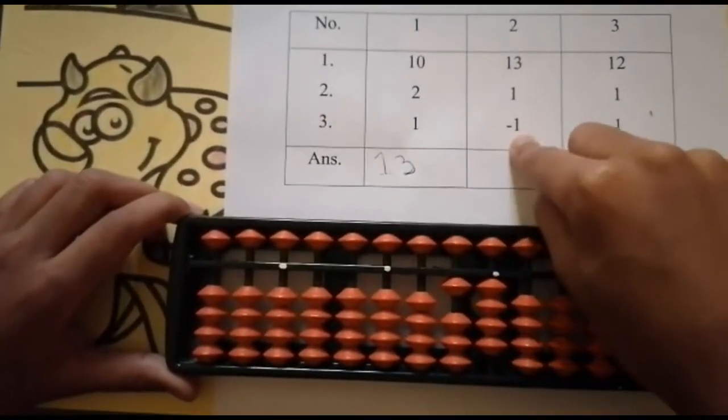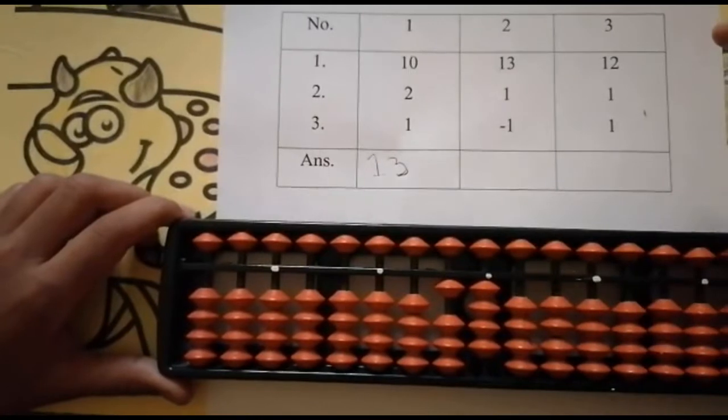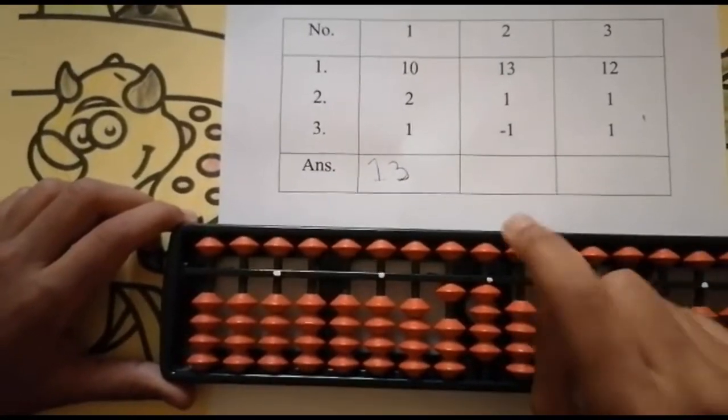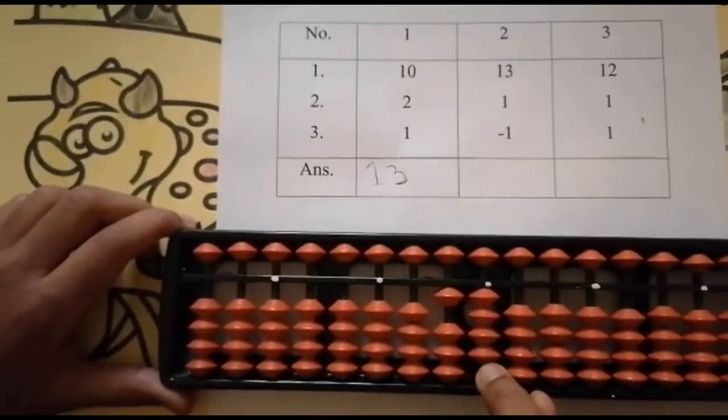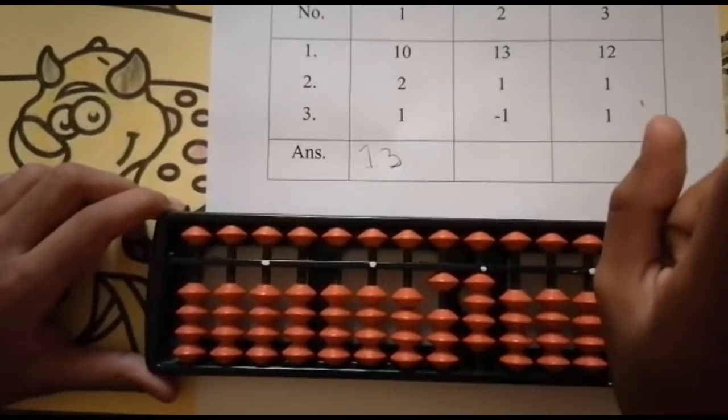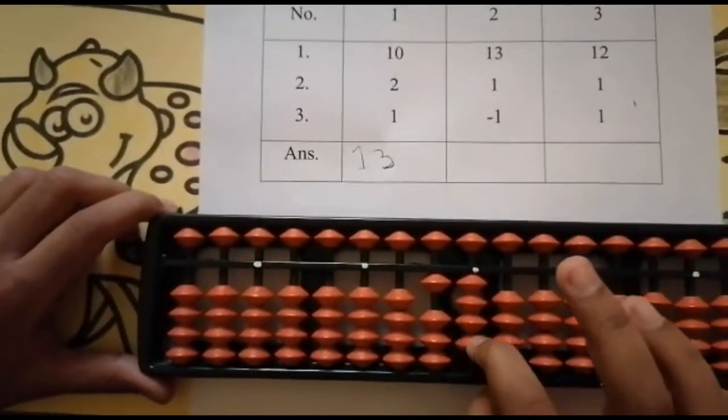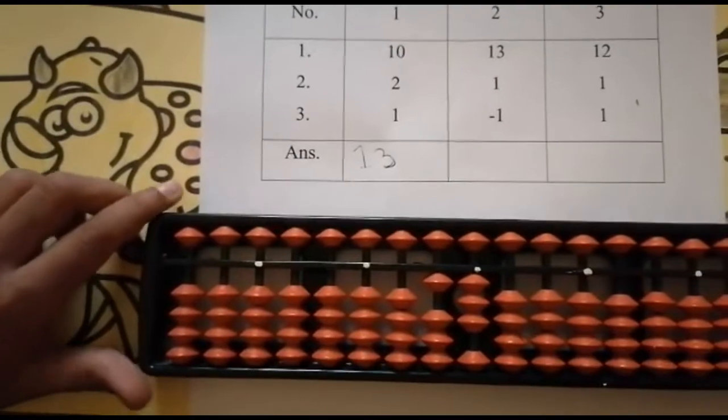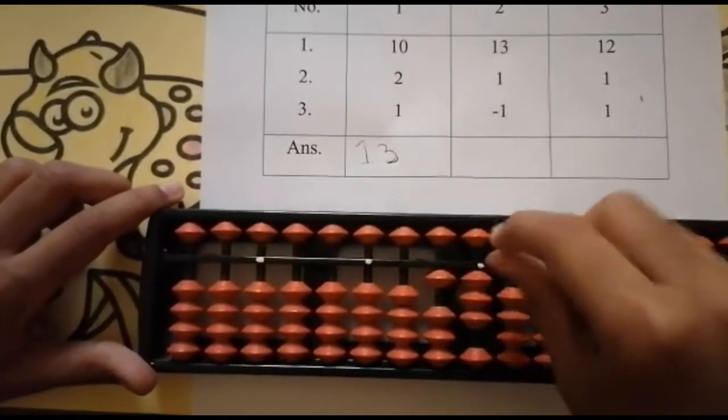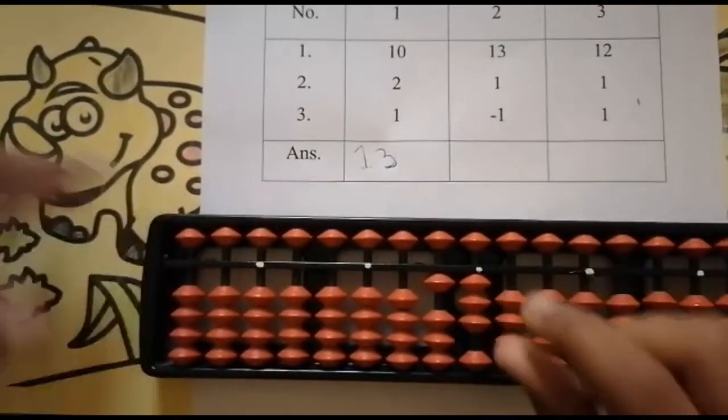And then the last number is minus 1. Can we do it? Yes, we have to do it in the ones place. Because it is single digit, you have to do it in the ones place. Minus 1, keeping the finger, got 13. 10, 11, 12, 13.